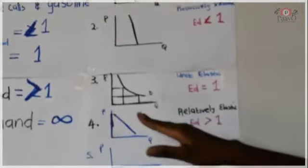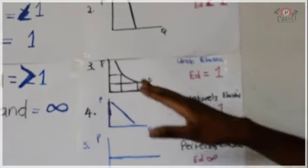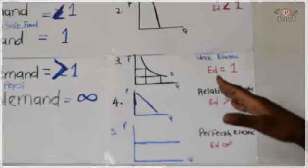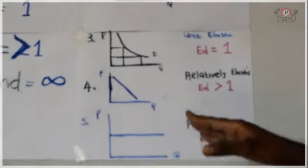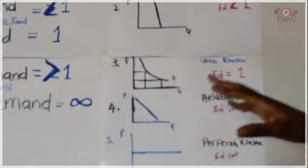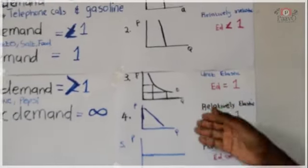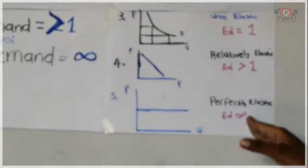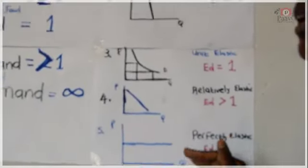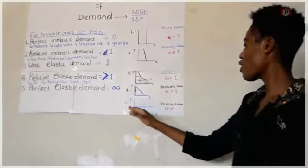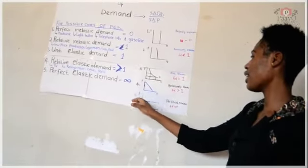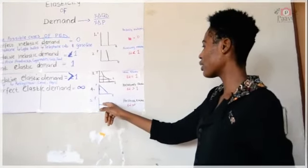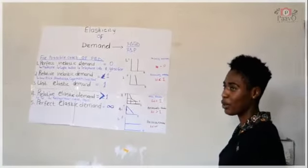For unitary elastic demand, a 20% increase in price results in a 20% fall in quantity demanded. For relatively elastic demand, the ED is greater than 1, meaning if the price goes up, there will be a greater change in quantity demanded. For perfect elasticity, the quantity demanded is not determined by price changes — if the price stays the same, say at $25, the quantity demanded will still change independently.